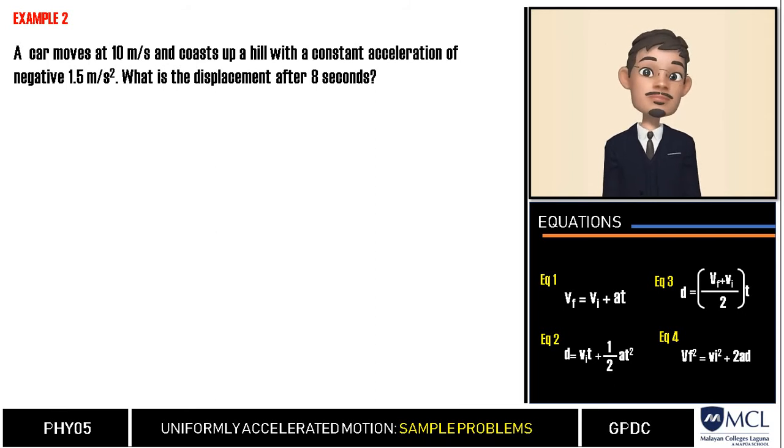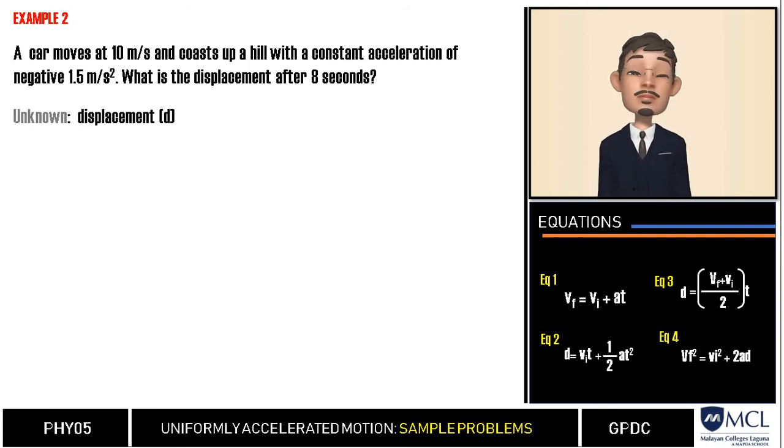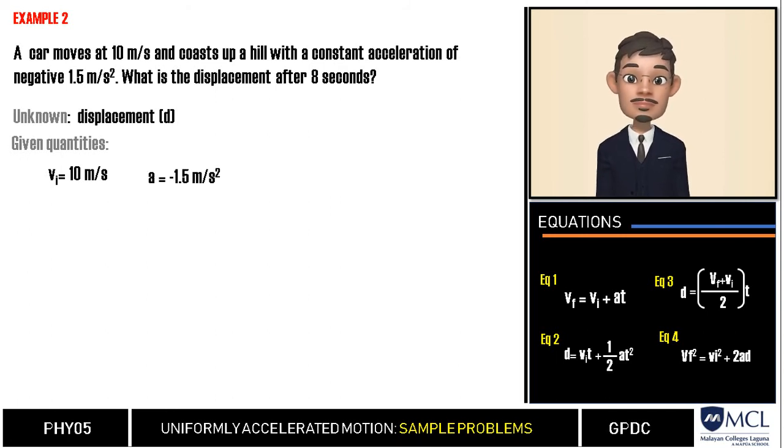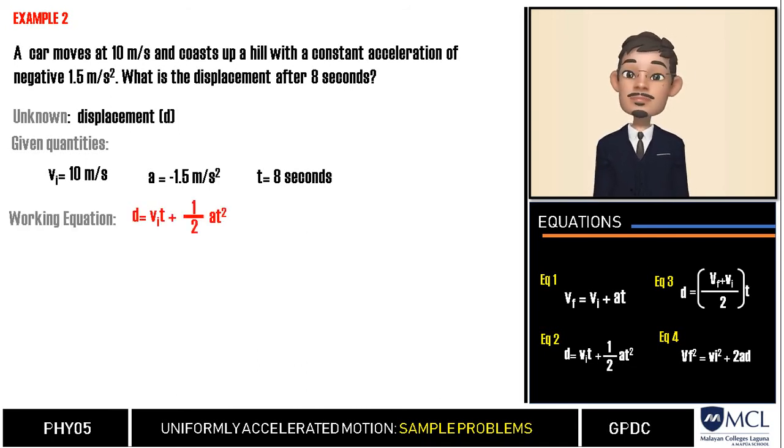In this problem, we are looking for the final displacement of the car. Our given quantities are initial velocity, which is 10 meters per second, an acceleration of negative 1.5 meters per second squared, and time, which is equal to 8 seconds. We can easily identify from our given and unknown quantities that the working equation must be d equals Vi*t plus one-half at squared.